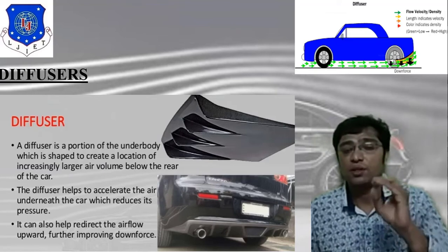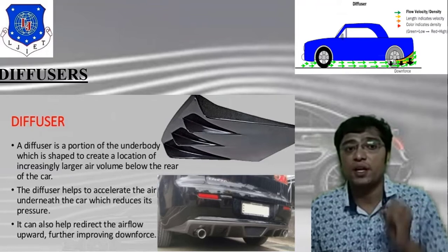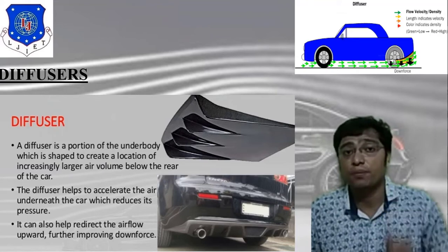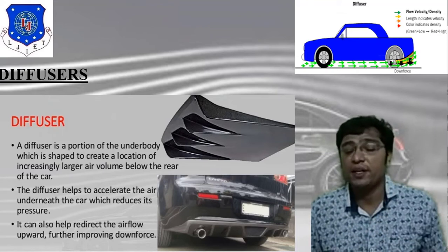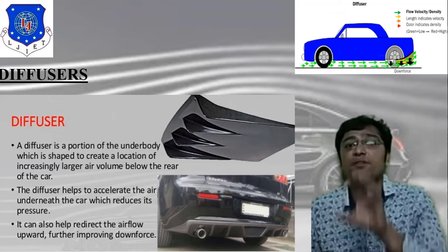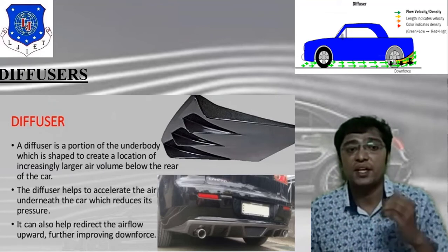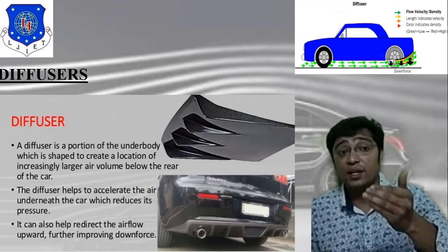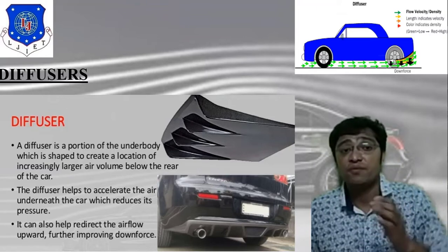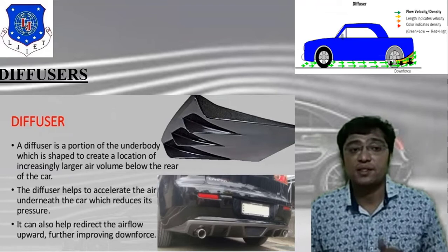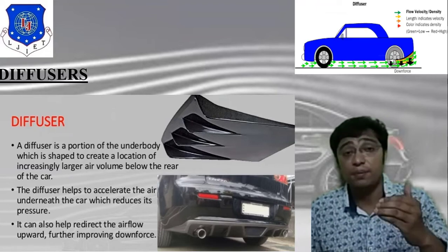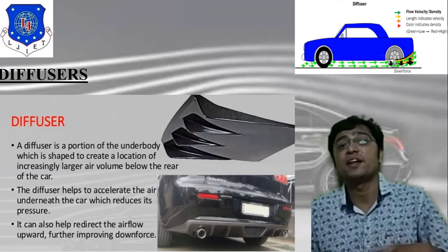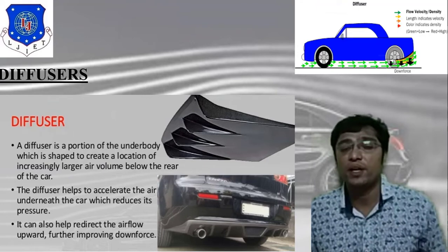A diffuser is a portion of the under-body shaped to create an allocation that increases the large air volume below the rear of the car. It helps to accelerate the air under the car, which reduces the pressure. It can also help redirect the airflow upward, further improving downforce and ultimately improving vehicle performance.